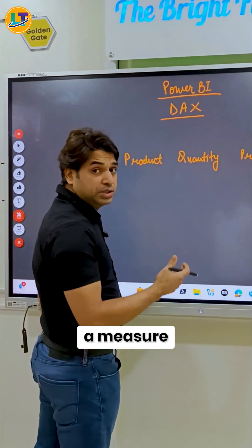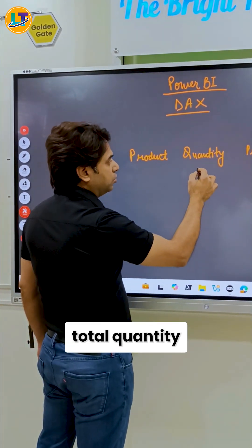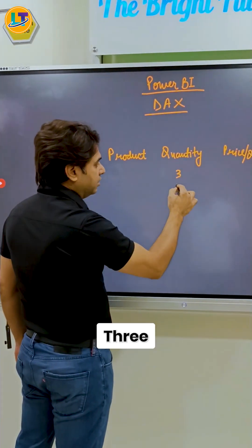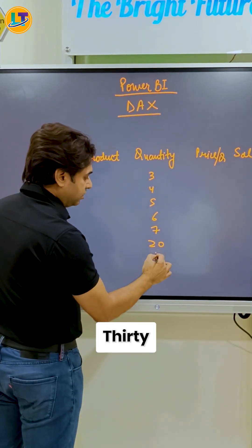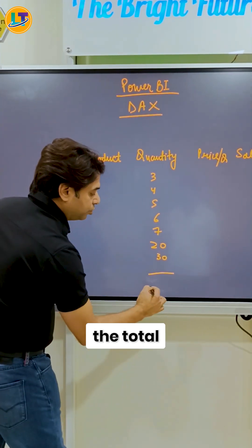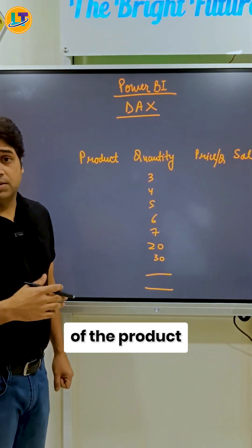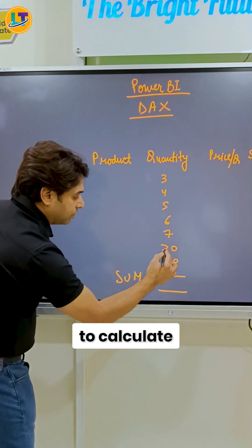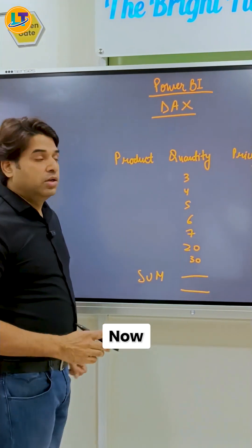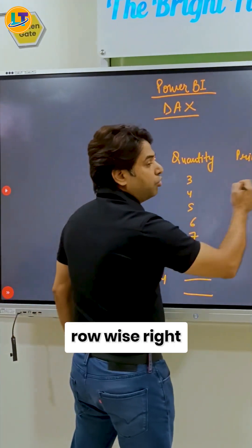And we have to calculate a measure, a single measure, on the total quantity. Like suppose we have three, four, five, six, seven, or twenty, thirty, and we have to calculate the total quantity of the products. So we will use the SUM function to calculate this quantity. Right? Now we have to calculate something row-wise.